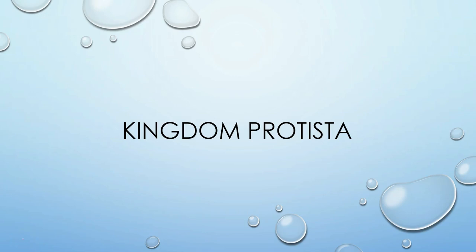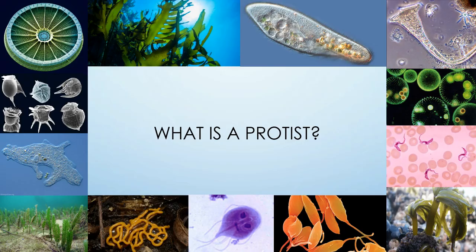Welcome everyone to our lecture on protists. The first thing we need to know about Kingdom Protista is that it is an incredibly diverse kingdom. It includes everything from diatoms, dinoflagellates, and amoebas to seaweeds like caulerpa and kelp. It also includes parasites like sleeping sickness and giardia, slime molds, photosynthetic algae, and paramecium, among many others. With all of this diversity, we need to first define what a protist is.